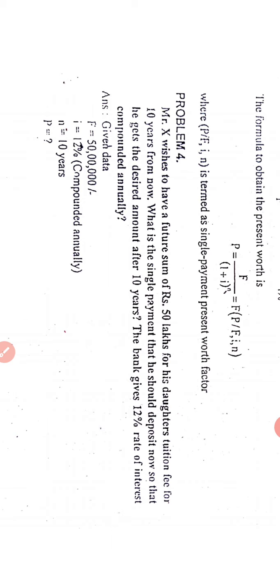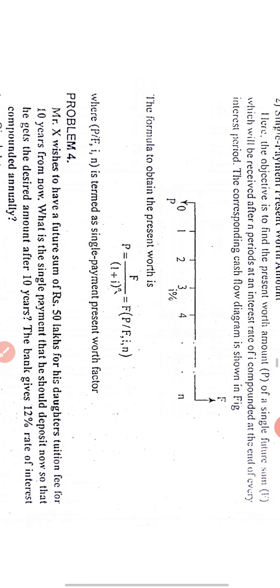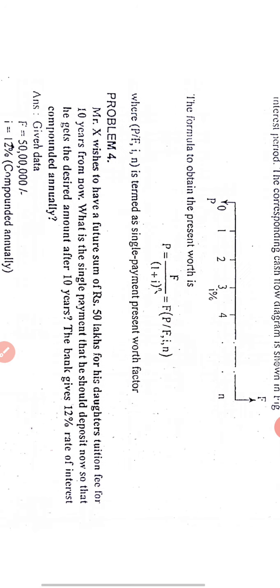What is the single amount he should deposit now so that he gets the desired amount after 10 years? So he wants to make some investment now, one single investment, so that he can get 50 lakh rupees at the end of 10 years, considering the bank gives an interest rate of 12 percent compounded annually. The same thing, you have to use the same formula: F is equal to P into bracket one plus i raised to n. Here we are going to find out P.